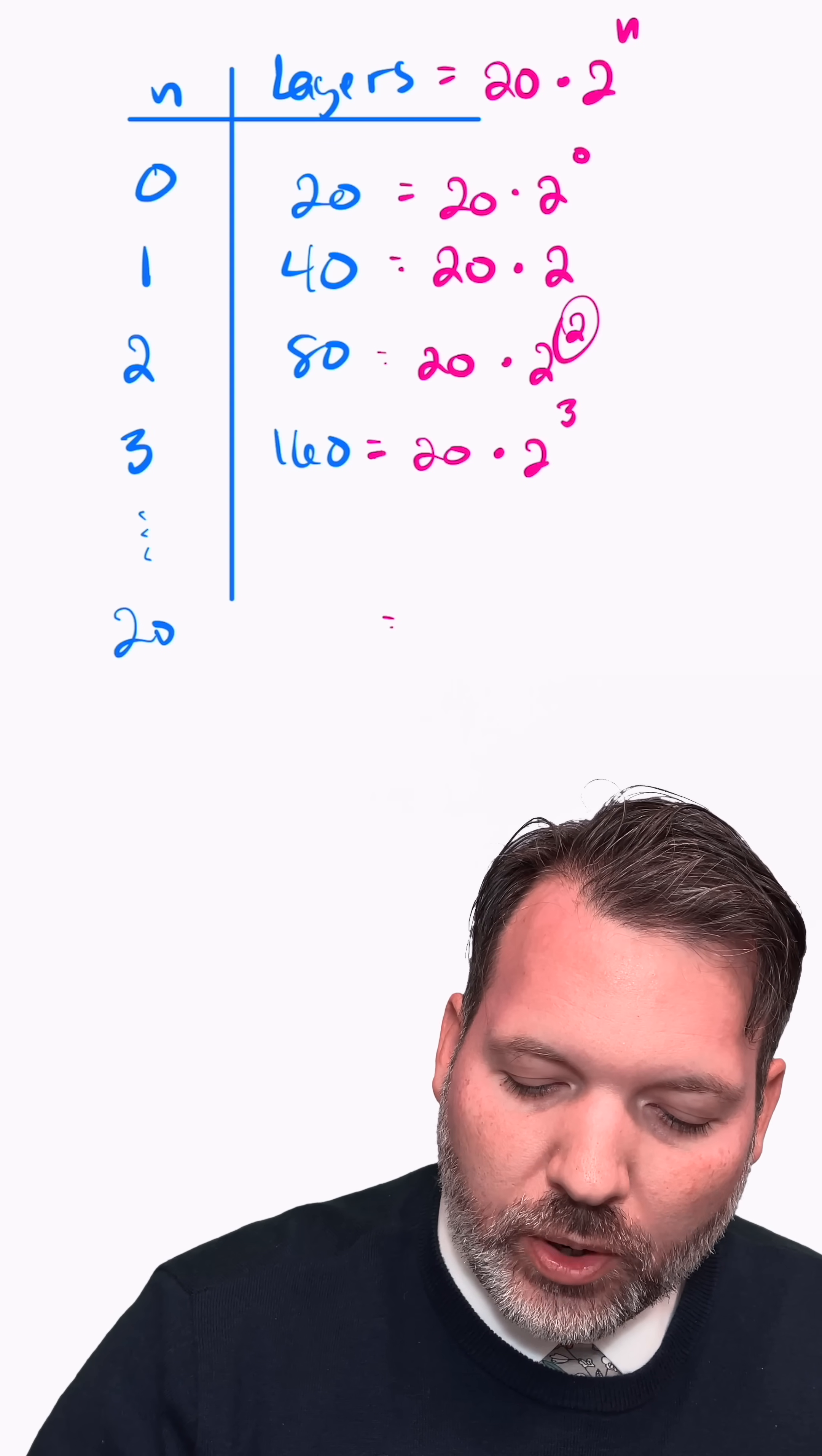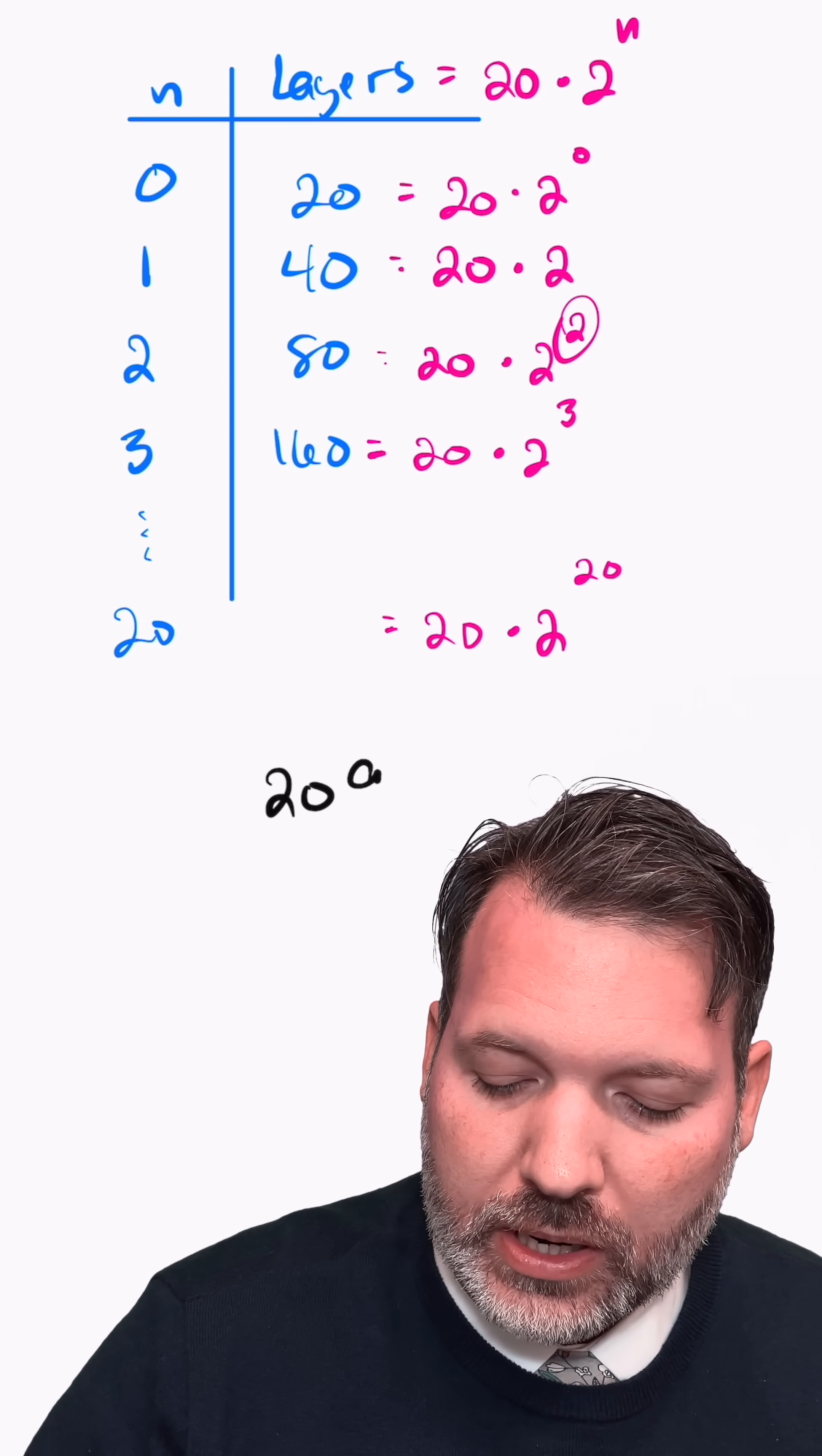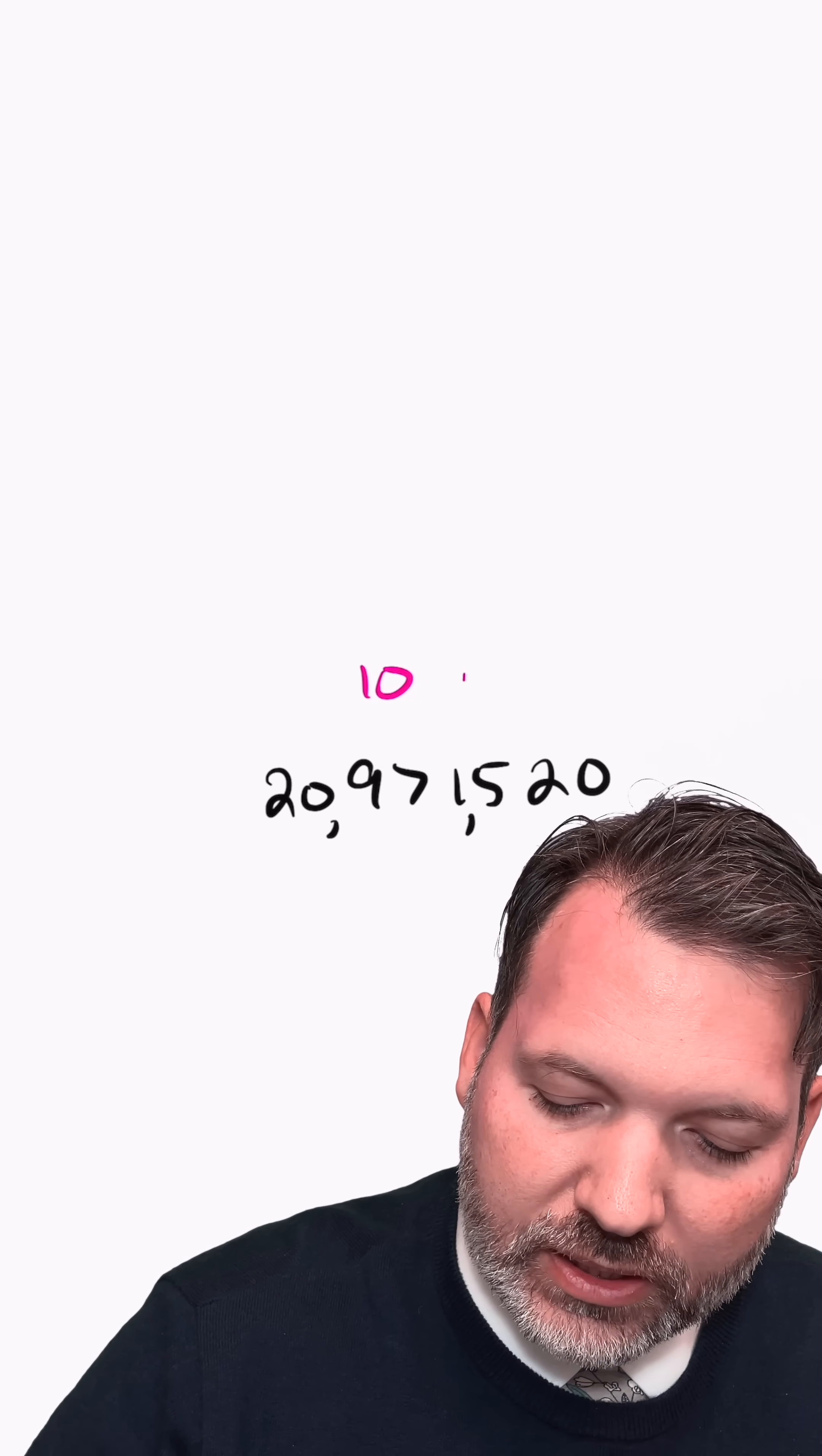That being said for the 20th cut to figure out the number of layers, we're going to work out 20 times two to the 20th power, which a calculator would tell us is 20,971,520. In other words, just under 21 million layers.